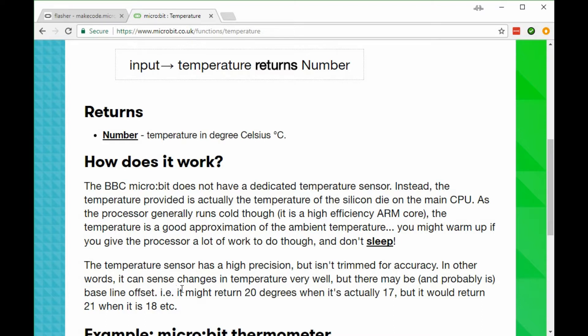Down here at the bottom it says there may be and probably is a baseline offset—it might return 20 degrees when it's actually 17, but it would return 21 when it's 18, etc. So the temperature reported by the micro:bit through this temperature variable is going to be high because it's the CPU temperature and not necessarily the ambient room temperature.